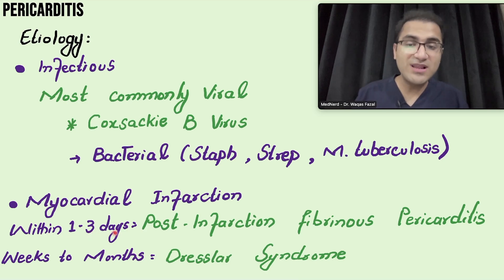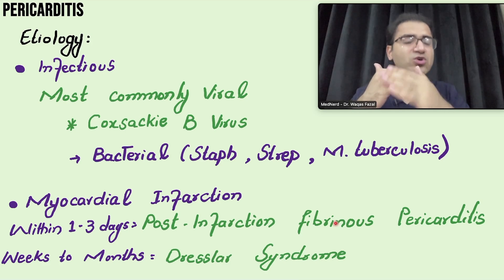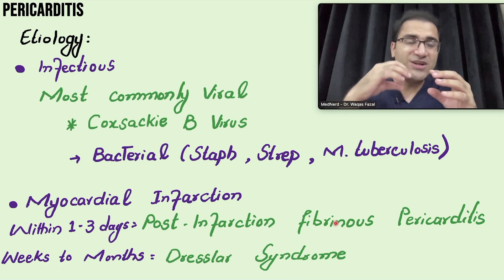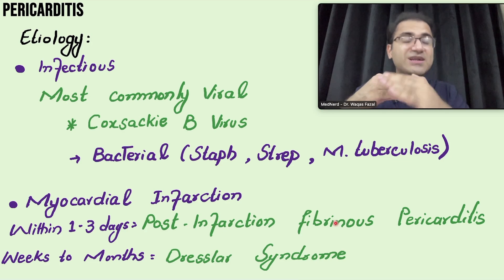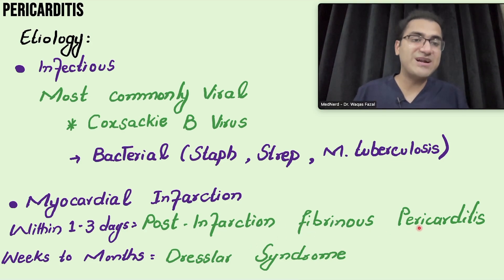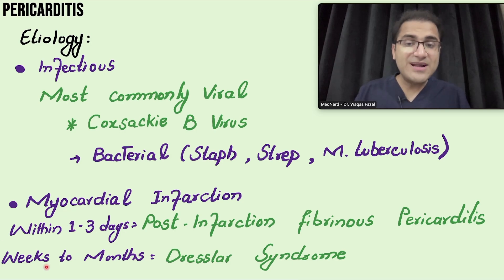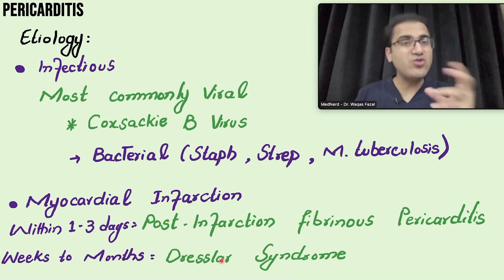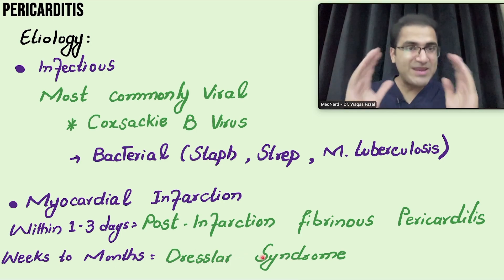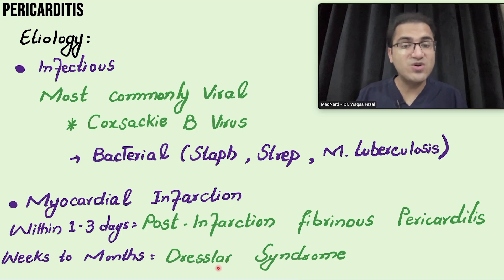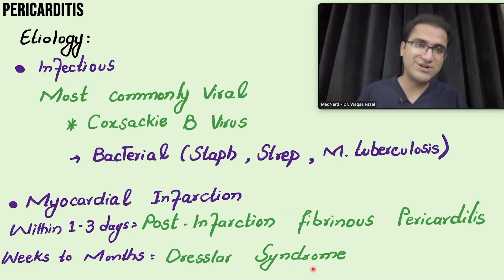Pericarditis can also occur after a myocardial infarction. If it occurs one to three days after MI, it is called post-infarction fibrinous pericarditis — caused by necrosis of pericardial tissue overlying the infarcted area. If pericarditis after MI occurs weeks to months later, that is called Dressler syndrome, which is an autoimmune pericarditis where the immune system attacks the pericardium. Timing is key to differentiating the two.